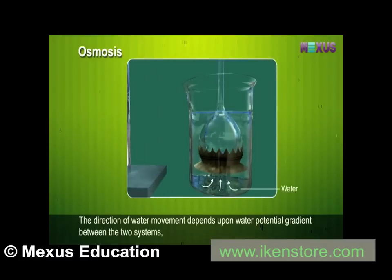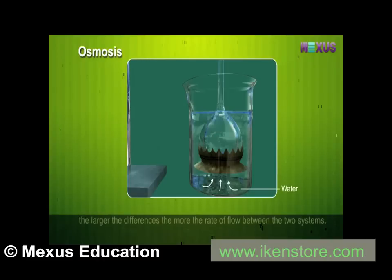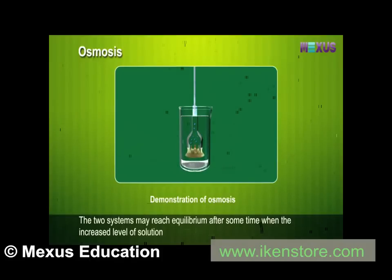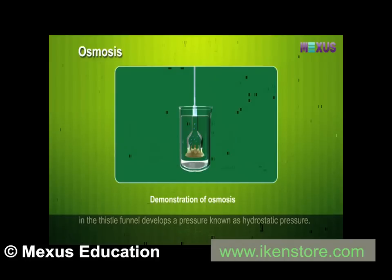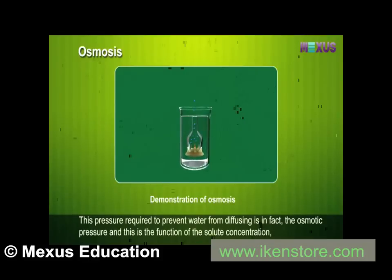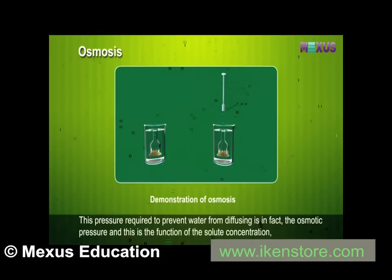According to thermodynamic principles, energy flows from higher to lower levels; therefore, water movement takes place from the pure water in the beaker to the solution in the thistle funnel through the selectively permeable membrane. The direction of water movement depends upon the water potential gradient between the two systems. The larger the difference, the greater the rate of flow. The two systems may reach equilibrium when the increased level of solution in the thistle funnel develops a pressure known as hydrostatic pressure.